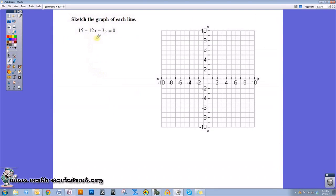The easiest way to do this one is to first rewrite this equation in slope-intercept form. Slope-intercept form is y equals mx plus b, where m is the slope and b is the y-intercept. So what I want to do is solve this equation for y.